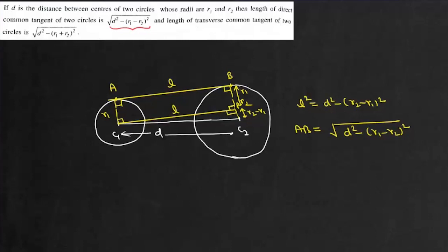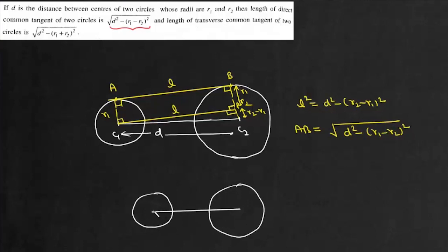Now in the second part we have to prove the length of the transverse common tangent. If we have a transverse common tangent between the two circles, this is c1c2, the radii are r1 and r2, and we have a transverse common tangent between the two circles. This is point A and this is point B. Now we extend this a bit.